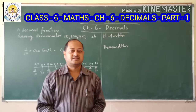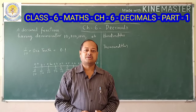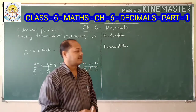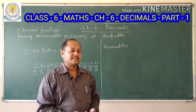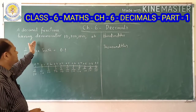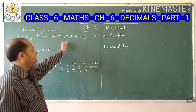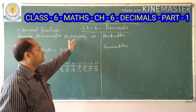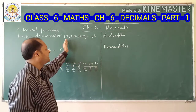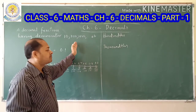Good morning students. In this video we are going to discuss chapter 6, that is decimals. A decimal is a fraction having a denominator like ten, hundred, thousand — that is, the denominator is ten or a multiple of ten, or you can say a power of ten.